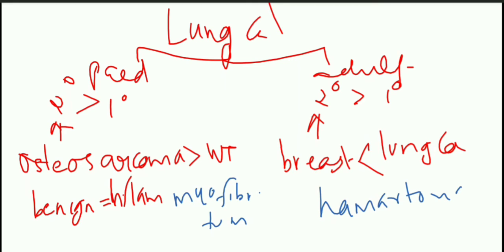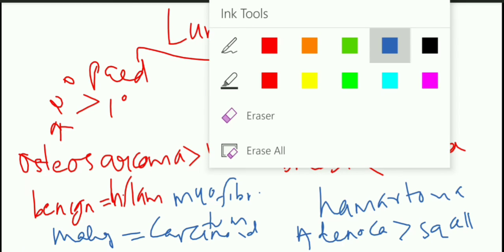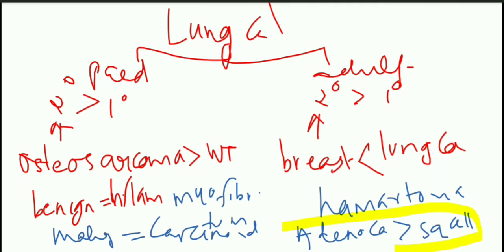In children, the most common primary malignant tumour is carcinoid. In the case of adults, the most common primary malignant tumour of the lung — primary lung cancer — is adenocarcinoma, which is more common than squamous cell carcinoma. We already know about this.